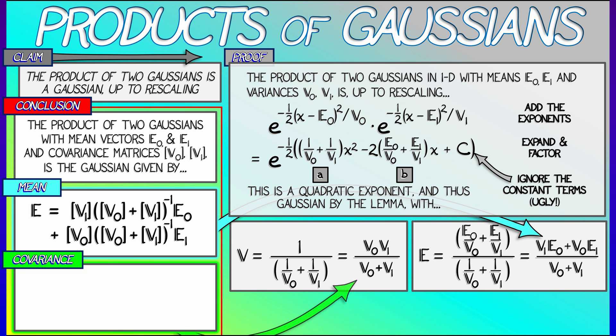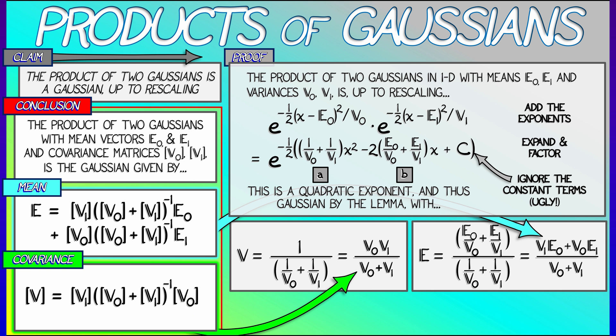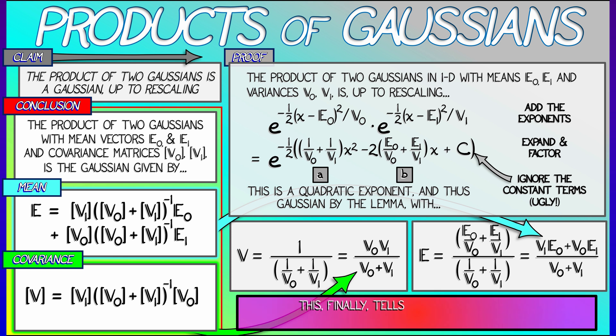In like manner, the new covariance matrix is v0 plus v1 inverse, pre-multiply by v1, post-multiply by v0. Now these formulae are complicated, but they are wonderful because they allow us to move forward with the Kalman filter. They show us how to update Gaussians by multiplying them together.